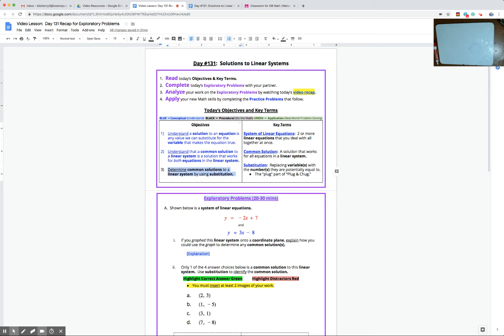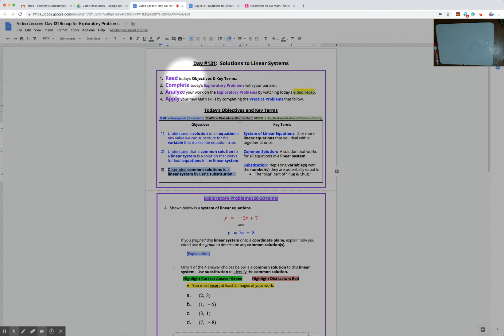At this point, you already should have taken some time to read through today's objectives and key terms. Objective 1 says to understand that the solution to an equation is the value we can plug in or substitute for the variable that makes the equation true. Objective 2 is to understand that a common solution to a linear system, linear systems being two or more linear equations at the same time, is the solution that's going to work for both of our equations in the linear system.